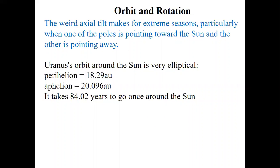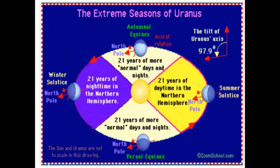The orbit and rotational periods. The weird axle tilt makes more extreme seasons, particularly when one of the poles is pointing toward the sun and the other is pointing away. Also Uranus is moving in a very elliptical path. The perihelion is 18.29 astronomical units and aphelion is 20.096 astronomical units. It takes 84.02 years to go once around the sun. The length of a year on Uranus is 84.02 Earth years.